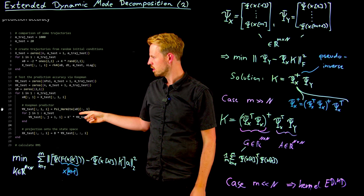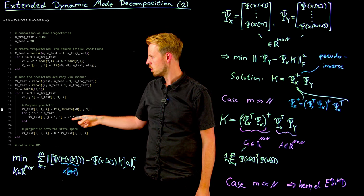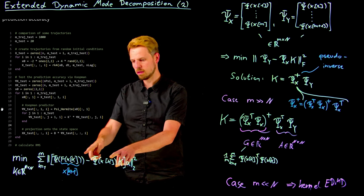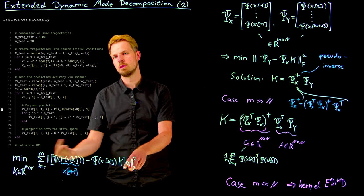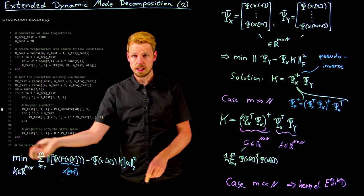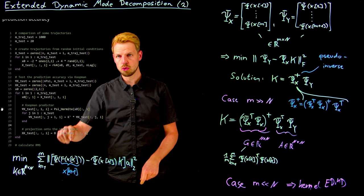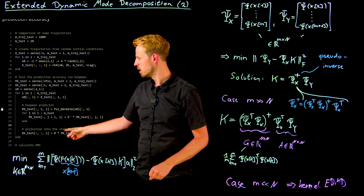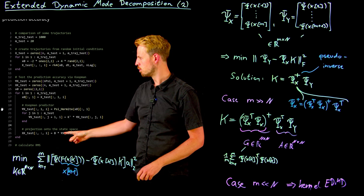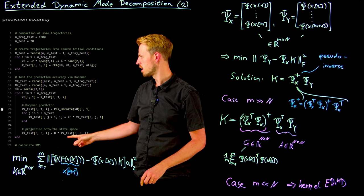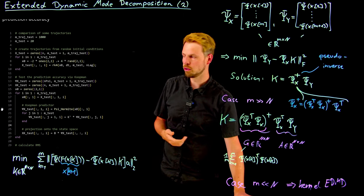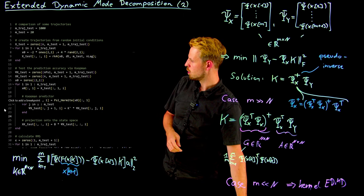And so what you see here is the forward propagation of these Psi's. We do not need the A coefficient here because this can be repeated and repeated and repeated. And all we need in the end is the projection back onto the state space. And so this is what we do here. Simply the XK is the projection. So B times the Psi. And this gives us our state trajectory in the predicted space.